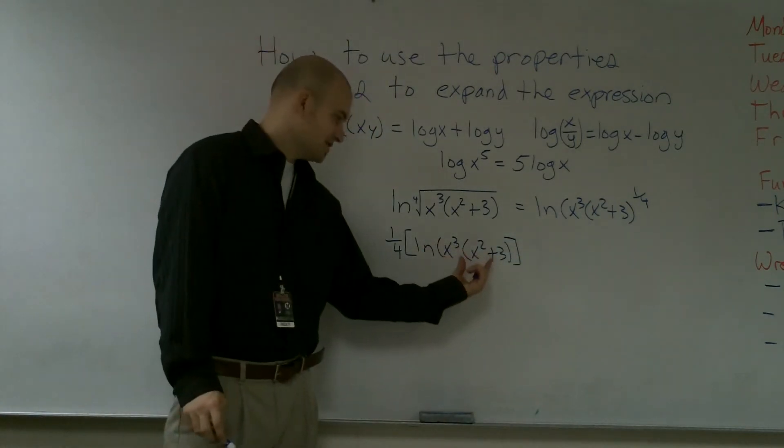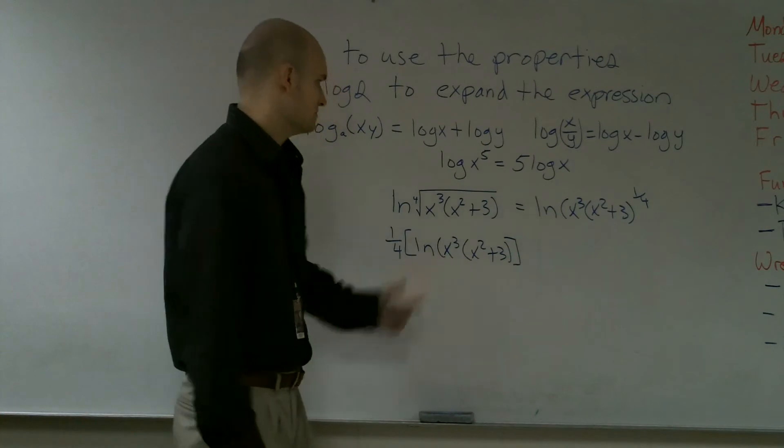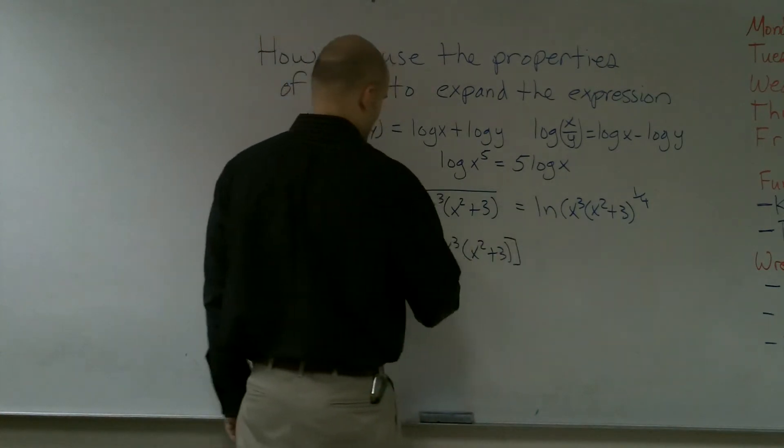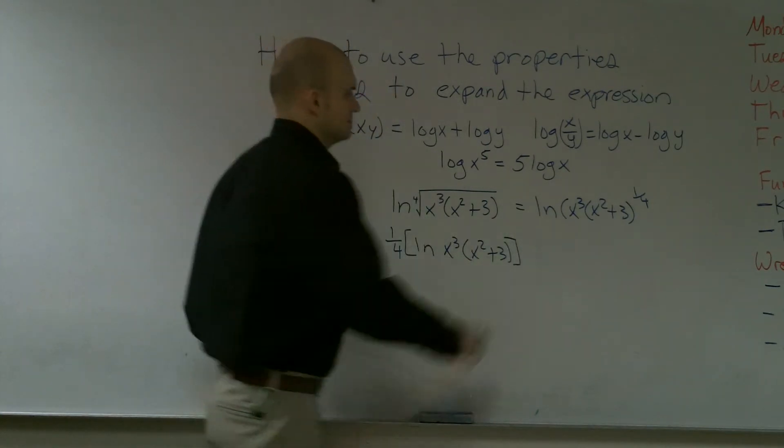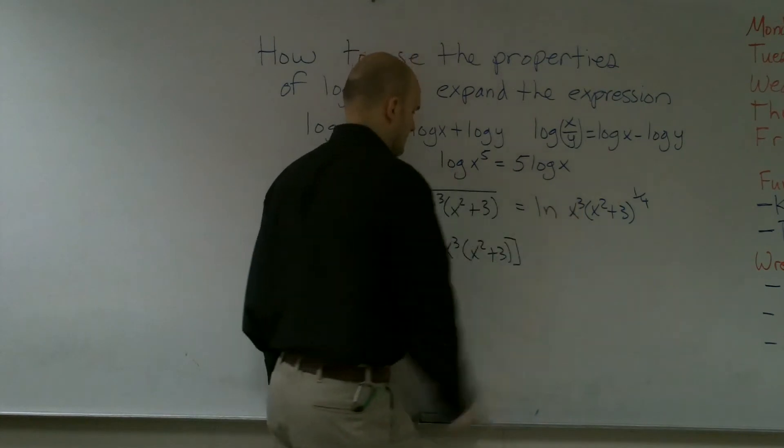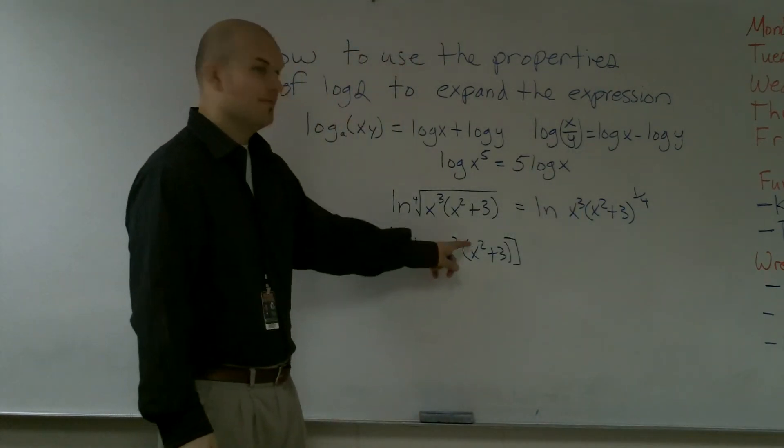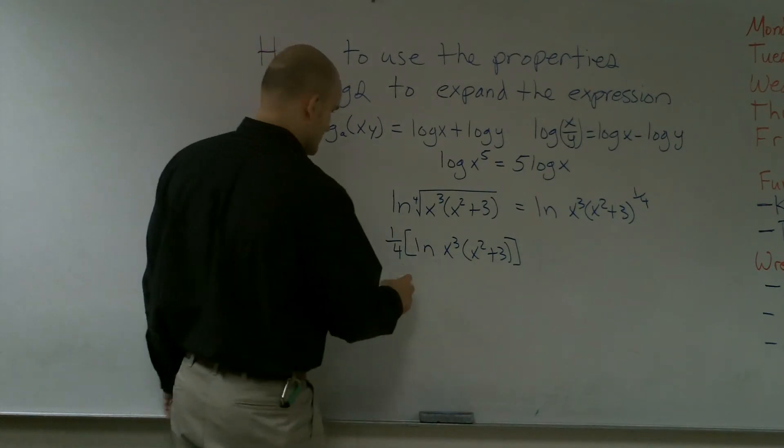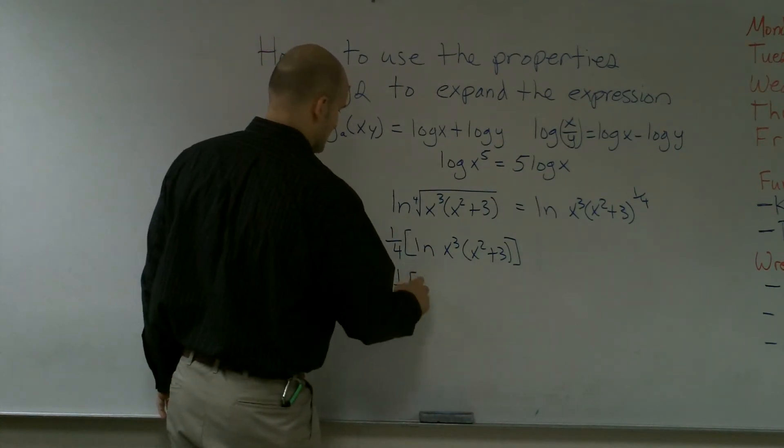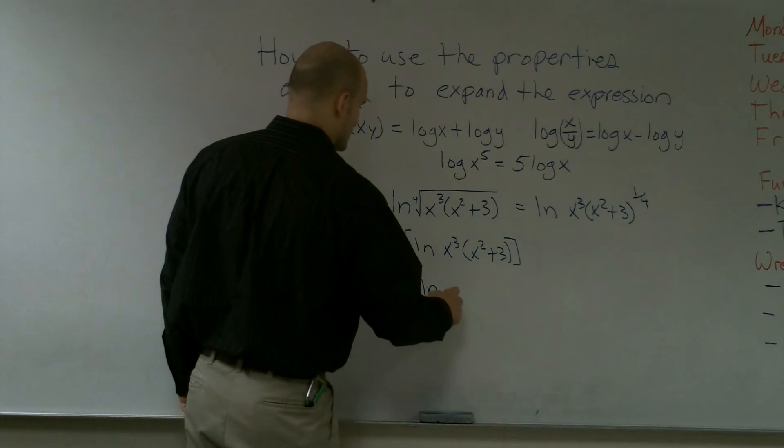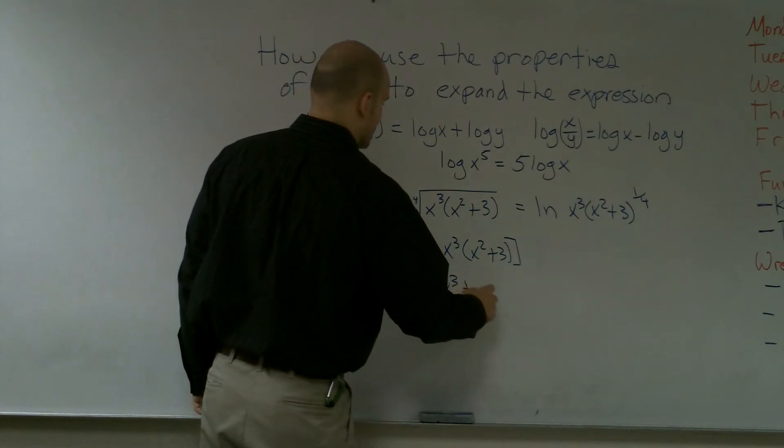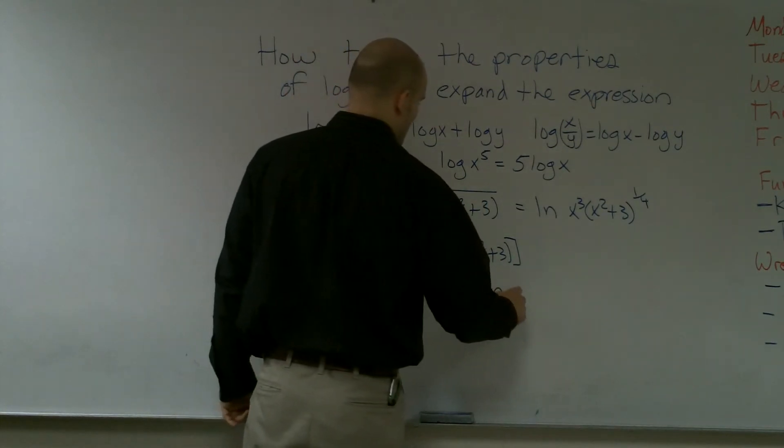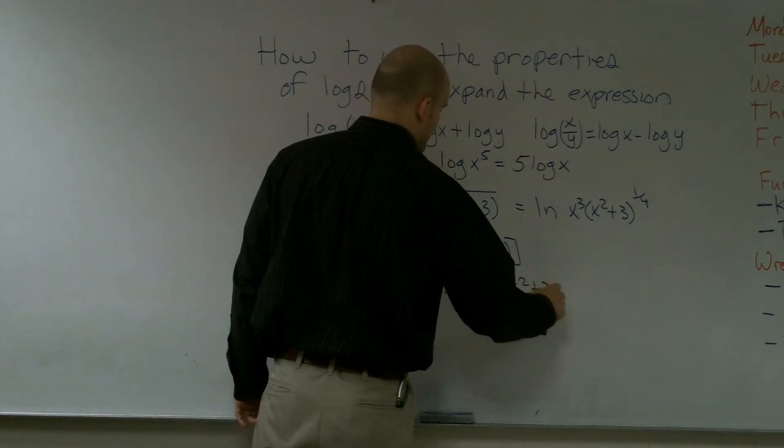Now I see I have a multiplication problem going on. So therefore, now I know that I have multiplication. So now inside the brackets, I can expand that further. So I have one-fourth brackets ln of x cubed plus ln of x squared plus 3.